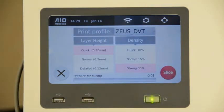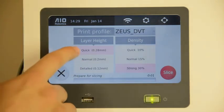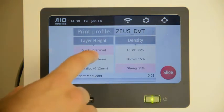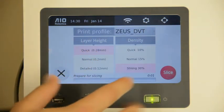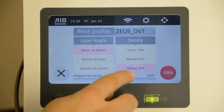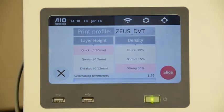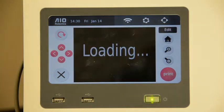One nice feature of ZEUS is you can now slice the STL file on the machine on board. So we choose a simple setting. Let's use a quick layer height of 0.28mm and let's choose the strong density setting and press the slice button. Within a few seconds the G-code file will be generated and you can directly start the printing process.